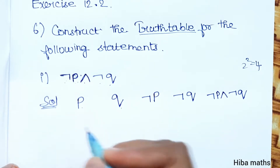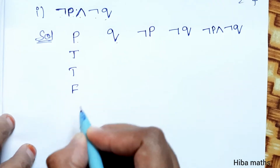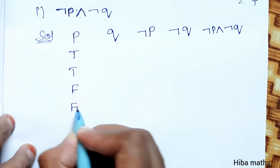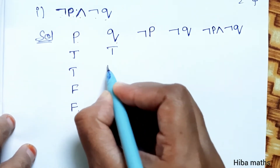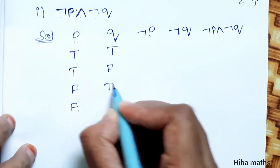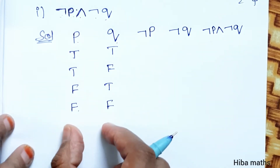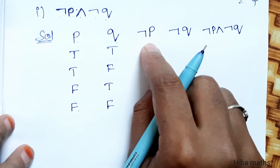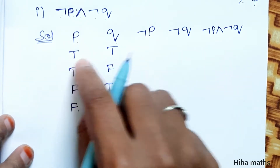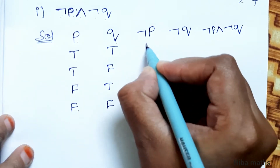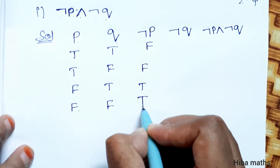So there are 4 possibilities. For P: 2 true, then 2 false. For Q: 1 true, 1 false, again 1 true, 1 false. Now, NOT of P is the inverse — if P is true then NOT P is false. So NOT P gives: 2 false and 2 true.